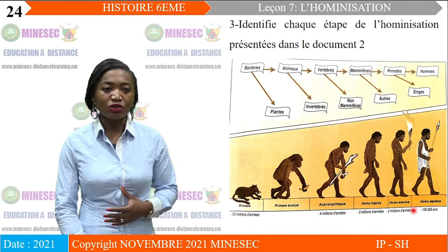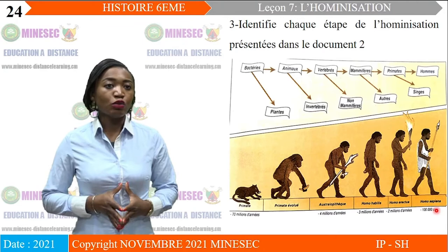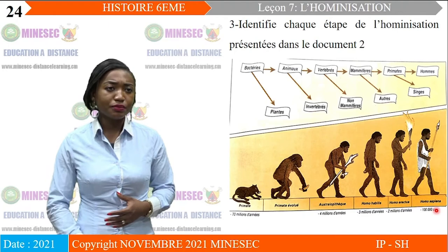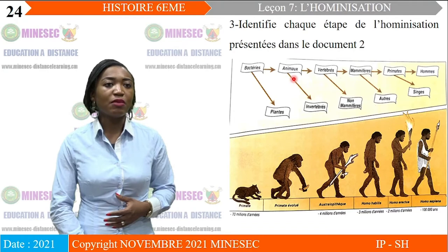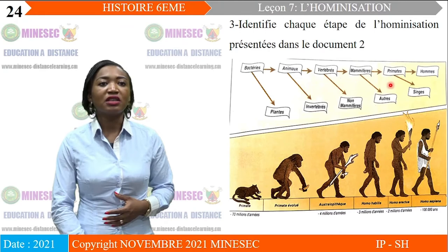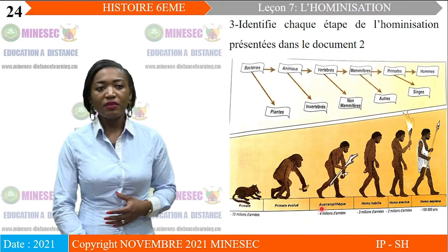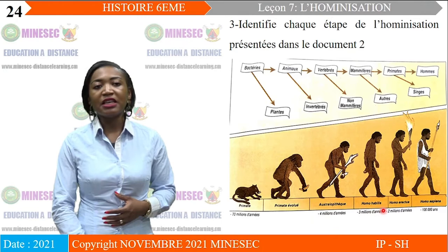Nous pouvons retenir que les différentes étapes de l'hominisation sont : tout a débuté par la bactérie, puis des animaux invertébrés, puis des vertébrés, ensuite des primates, puis des primates évolués, ensuite l'australopithèque, puis l'homo habilis, puis l'homo erectus, et enfin l'homo sapiens.